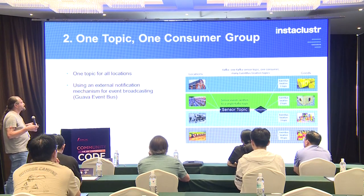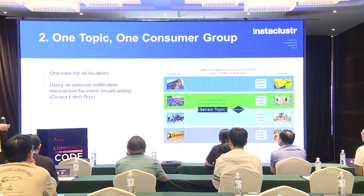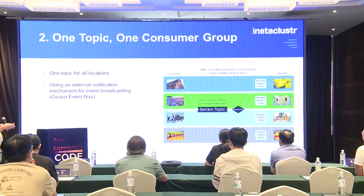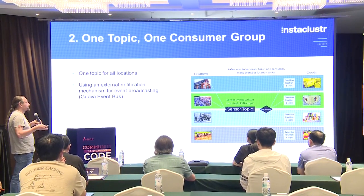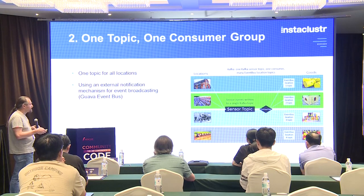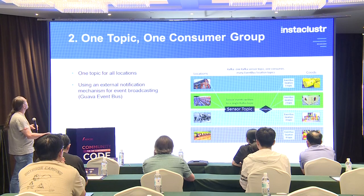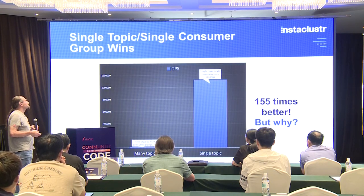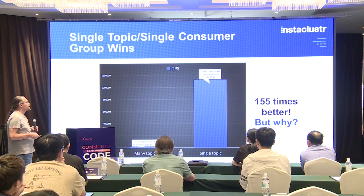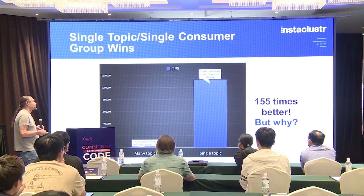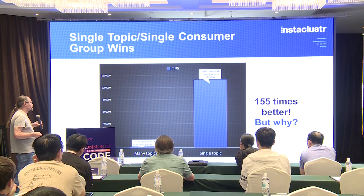The second design choice was simpler: one topic for all locations. Instead of having many consumer groups, I used an external notification mechanism to do the event broadcasting — to send events to the correct objects that needed to receive them. Which one worked better from a performance perspective? Interestingly, the single topic, single consumer group design wins by a significant factor of 155 times better throughput than the original choice involving many topics and many consumer groups.